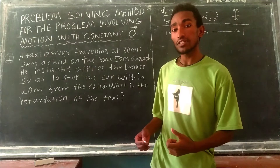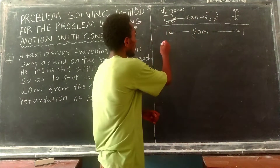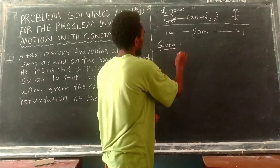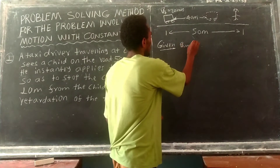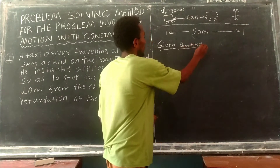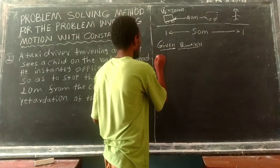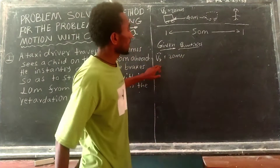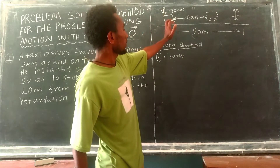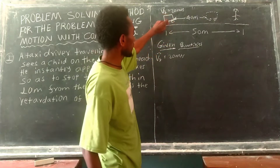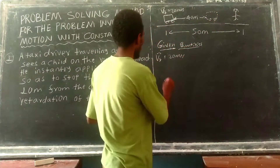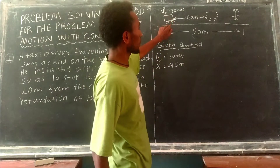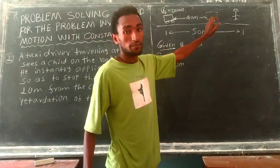The given quantities are: initial velocity is 20 meters per second, final velocity is 0 meters per second, and displacement x is 40 meters — that is, the taxi must stop 10 meters from the child, leaving 40 meters of braking distance.